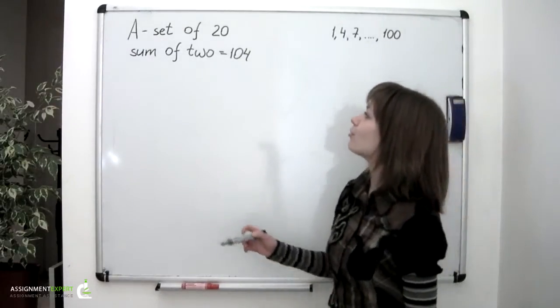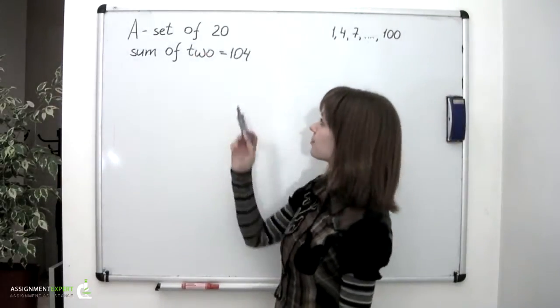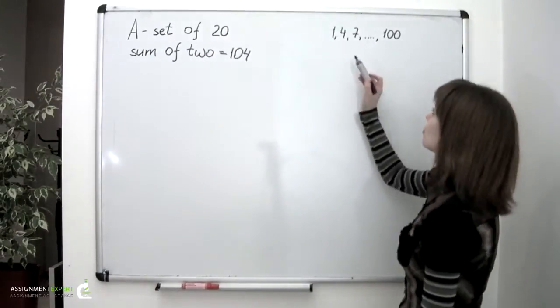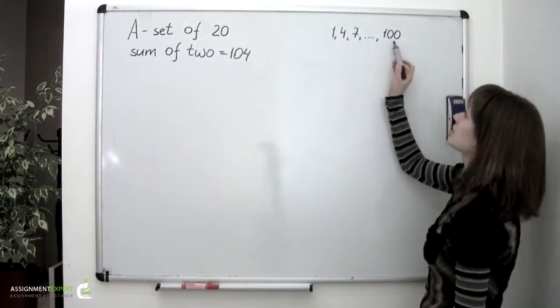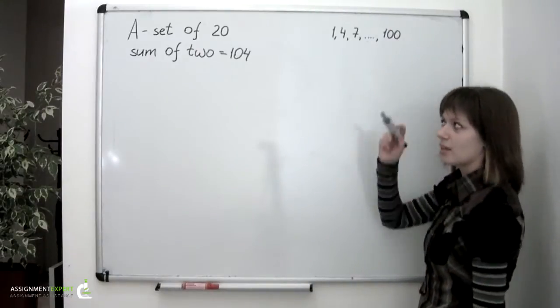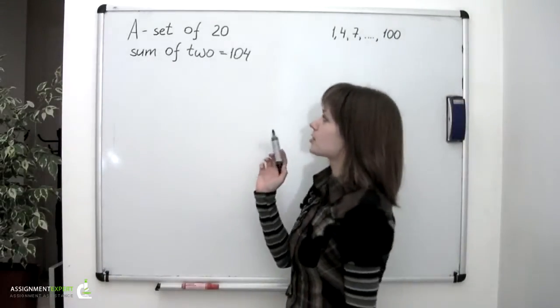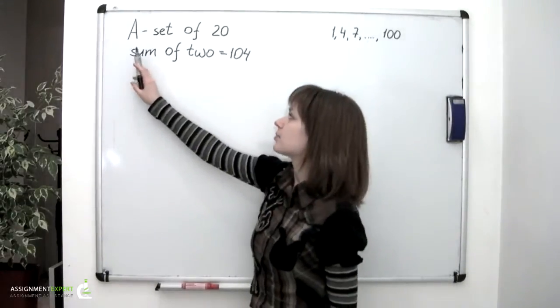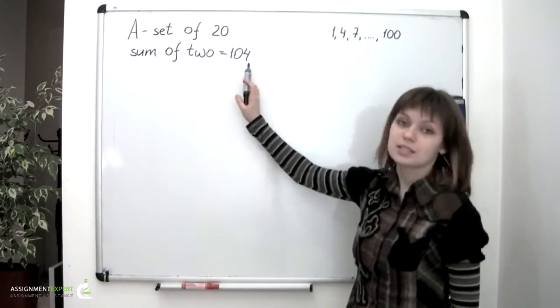Let A be a set of 20 distinct integers, chosen from the arithmetic progression 1, 4, 7, and so on, up to 100. We are asked to prove that there are two integers in this set whose sum is 104.